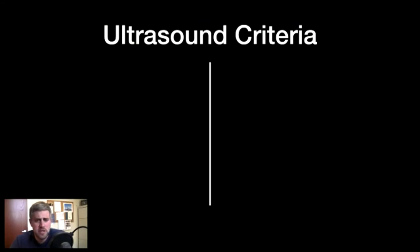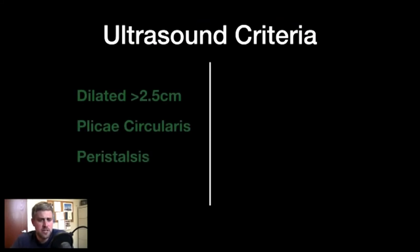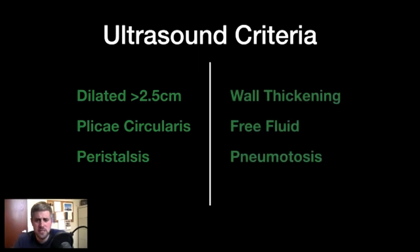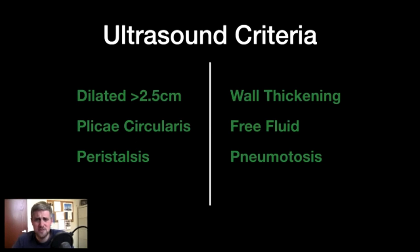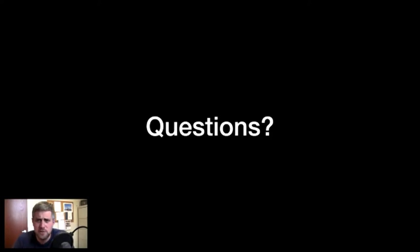In conclusion, the ultrasound criteria for bowel obstruction: greater than two and a half centimeter dilation of the small bowel loops, the plicae circularis, and you see that to-and-fro peristalsis. Signs that things may be a little bit worse: bowel wall thickening, free fluid — whether that's small fluid in between loops of bowel or large-volume ascites, probably more likely the former — and look for pneumatosis intestinalis, look for evidence of air in the bowel wall, and then air in the liver as well. Any questions, thoughts, comments, concerns, or random musings?